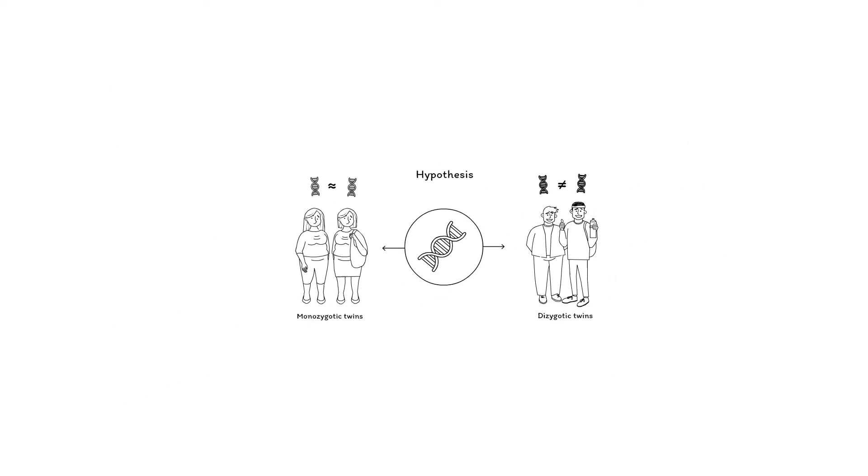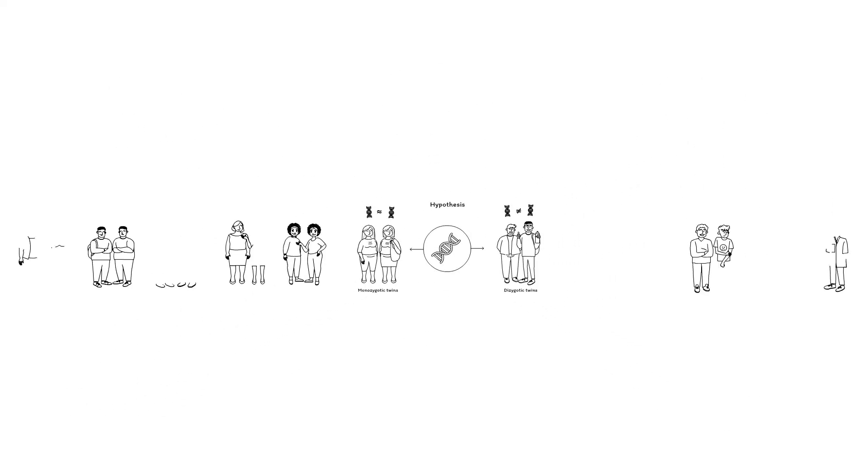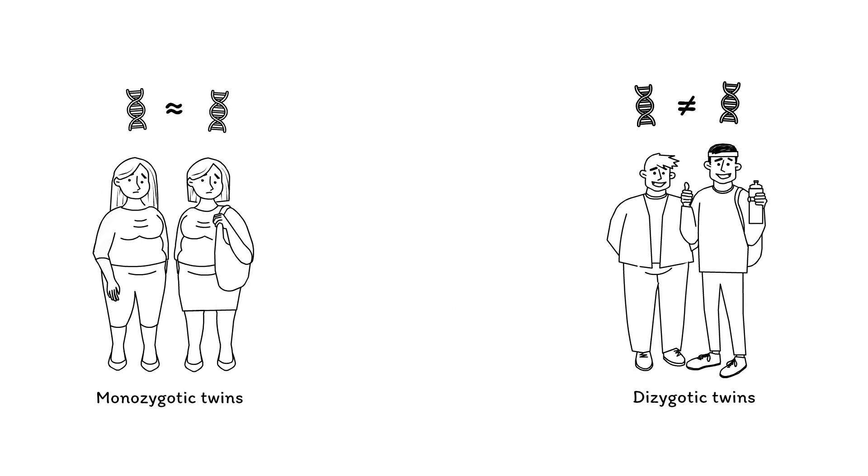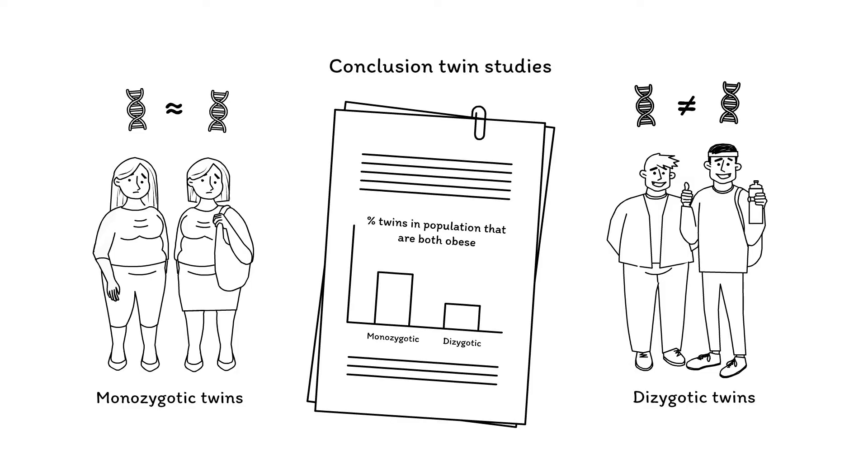Results of large twin studies confirmed this idea, as monozygotic twins were more often both obese than dizygotic twins, proving that there is a substantial genetic contribution in the risk of developing obesity.